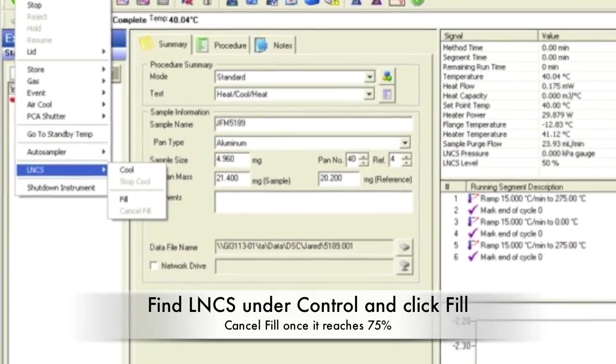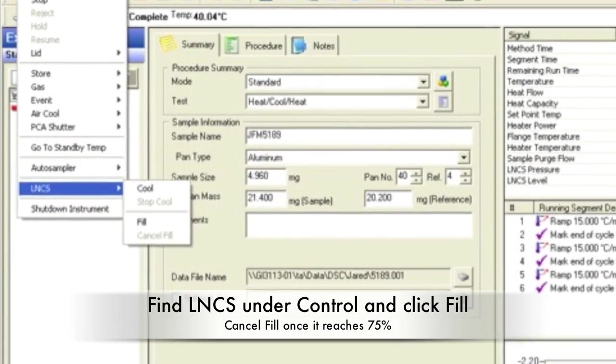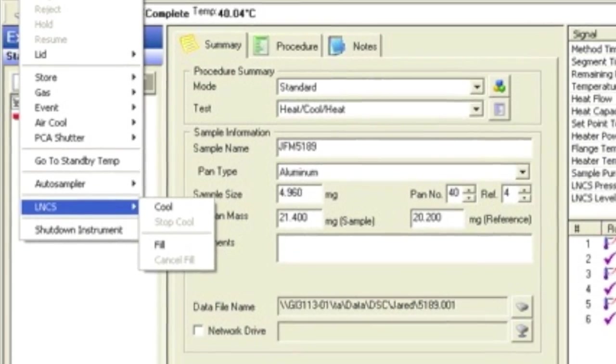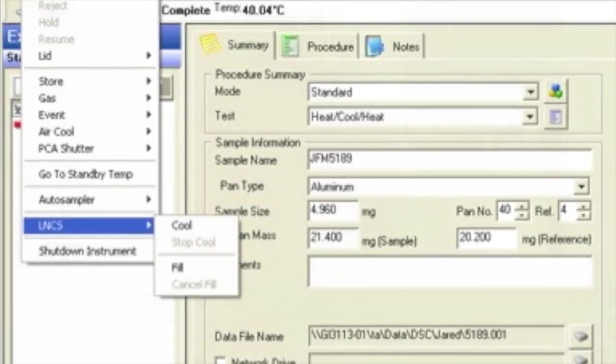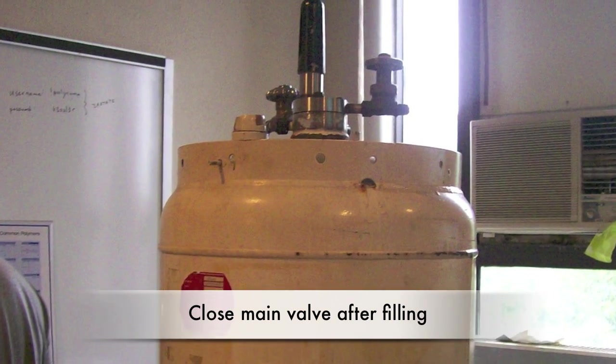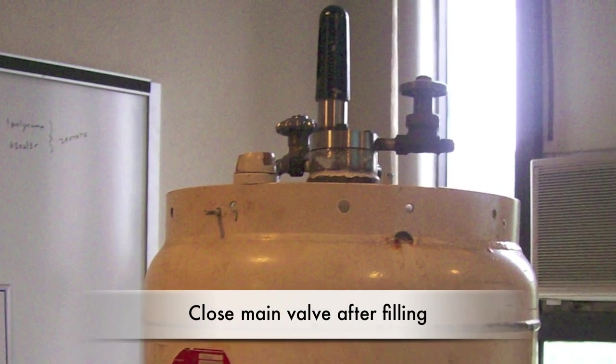In the software, click on Control-LNCS and then Fill. Once the liquid nitrogen level reaches 75%, click the Cancel Fill option under the Control and LNCS menu. Turn the main valve off when the filling is complete.